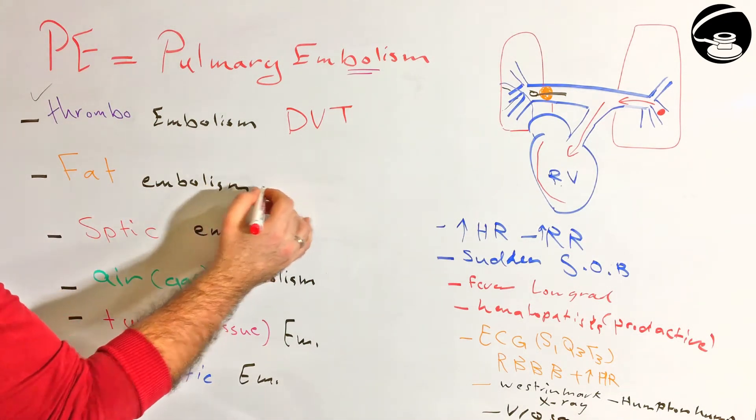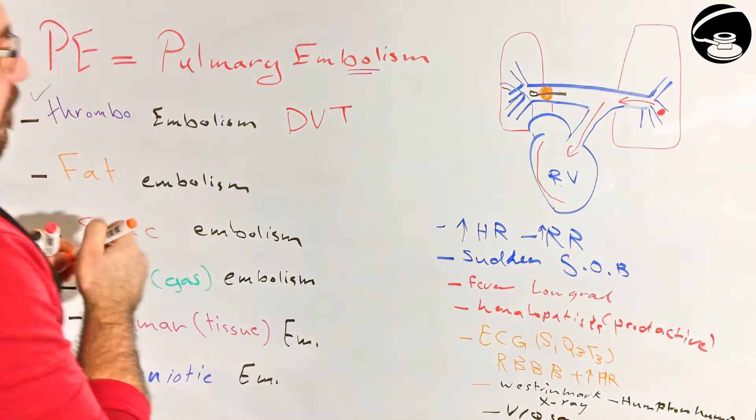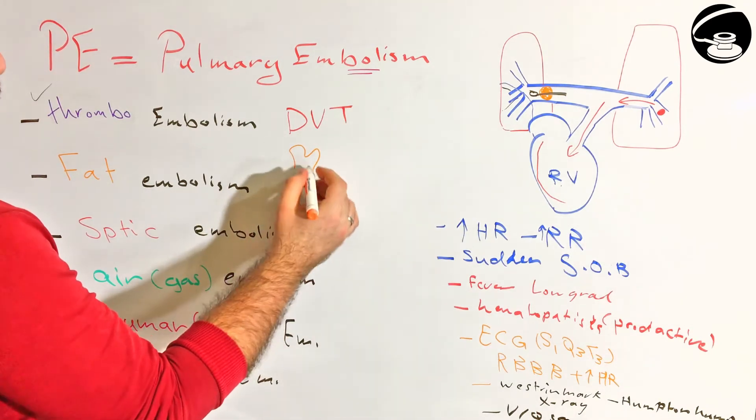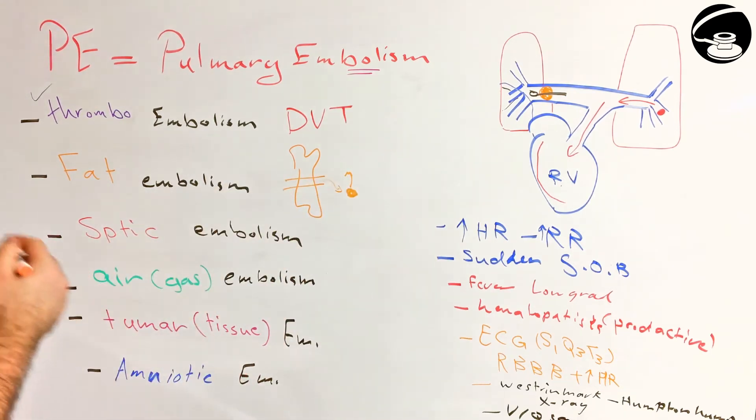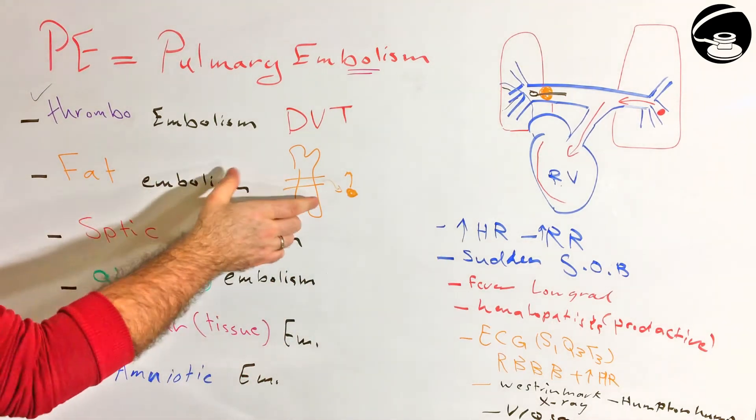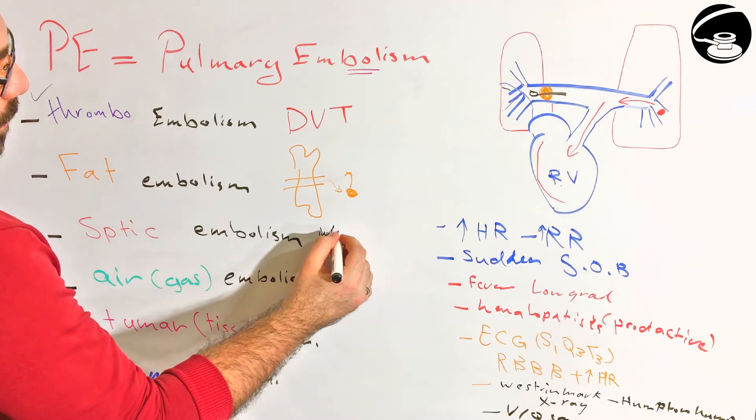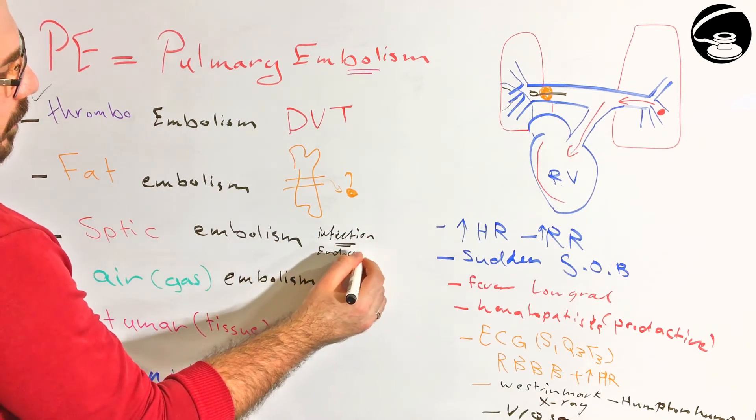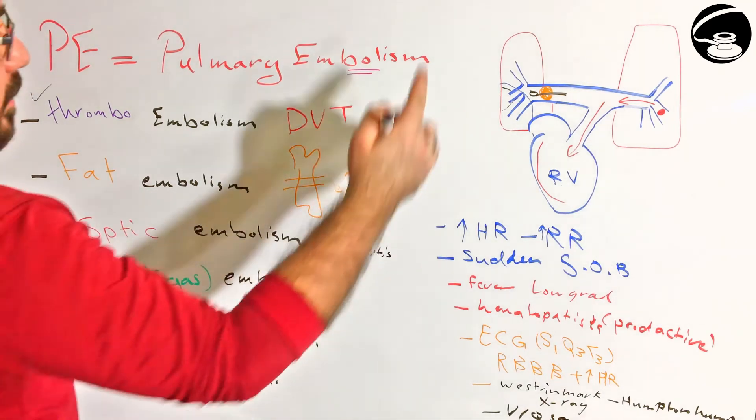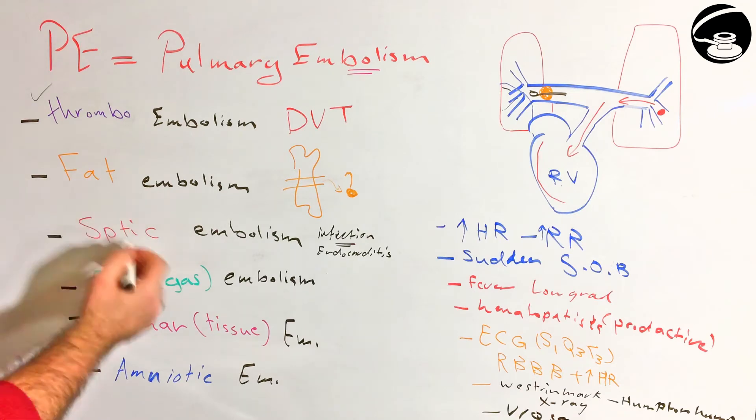Fat embolism basically happens when a bone fractures, because the bones contain fat, what we call the yellow marrow. So when a bone breaks, sometimes it leaks fat into the blood and can cause embolism. Septic embolism happens because of infection, basically when you have endocarditis. The valves are defected and then they can throw some thrombus, so they can cause septic emboli.